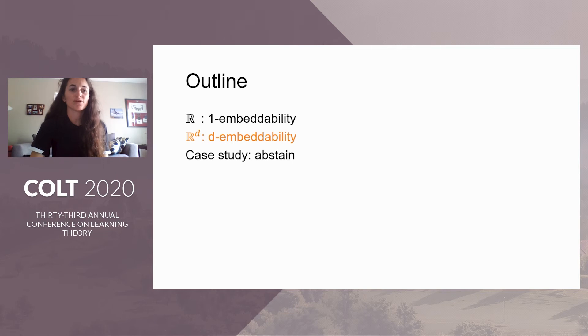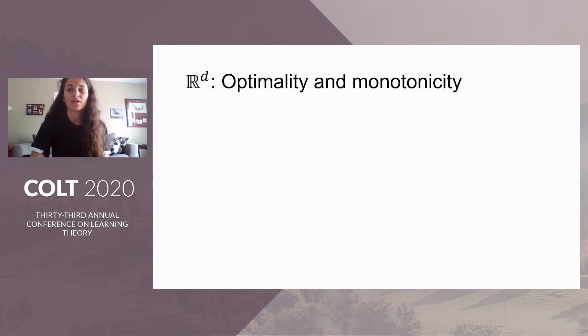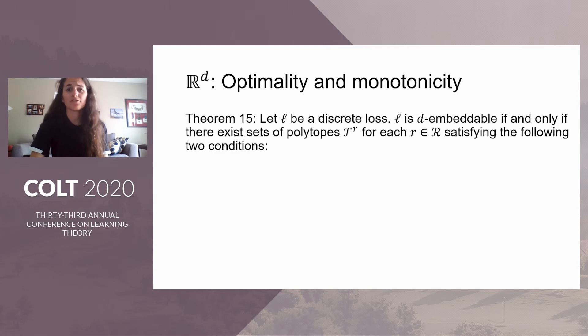Next, we move on to our general d-embeddability characterization. In general dimensions, we give necessary and sufficient conditions for embeddings in terms of convex polytopes. Theorem 15 states that a discrete loss is d-embeddable if and only if there is a set of polytopes satisfying the following notions of monotonicity and optimality.